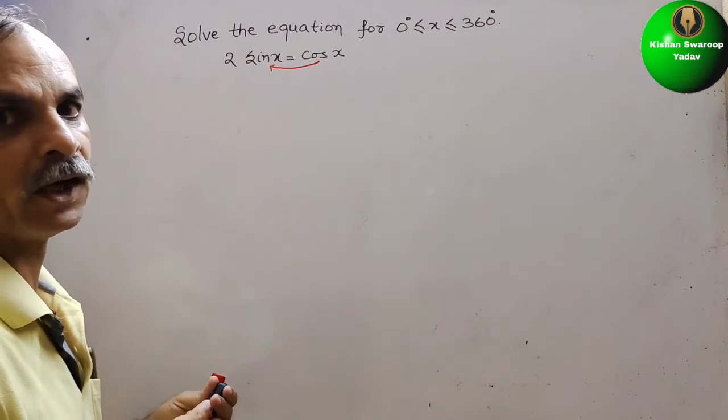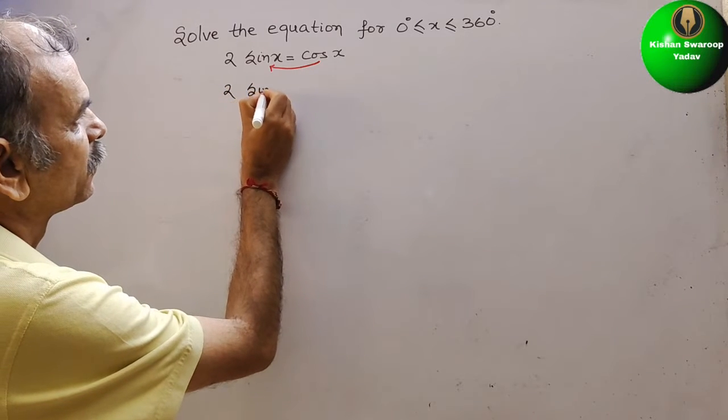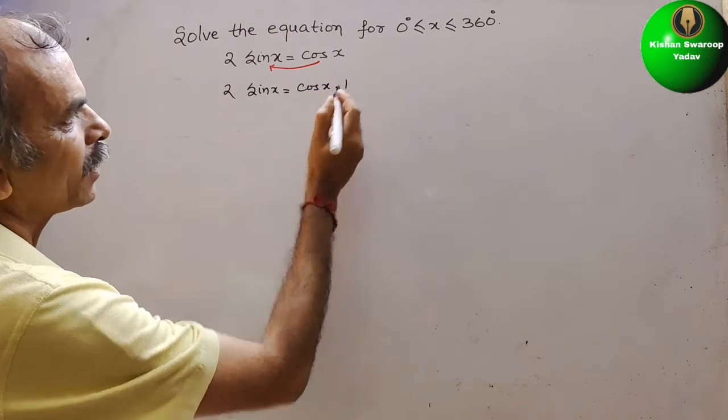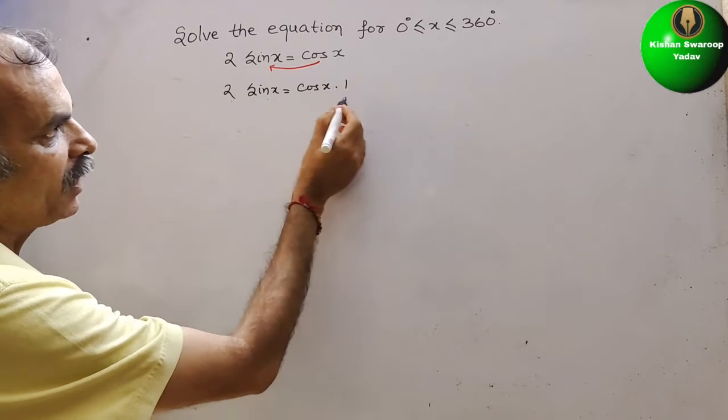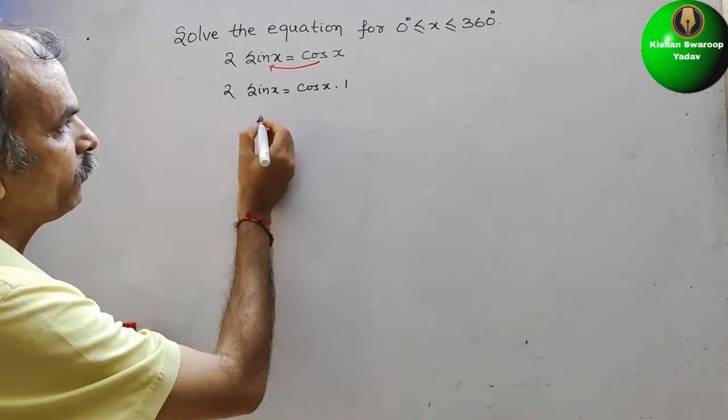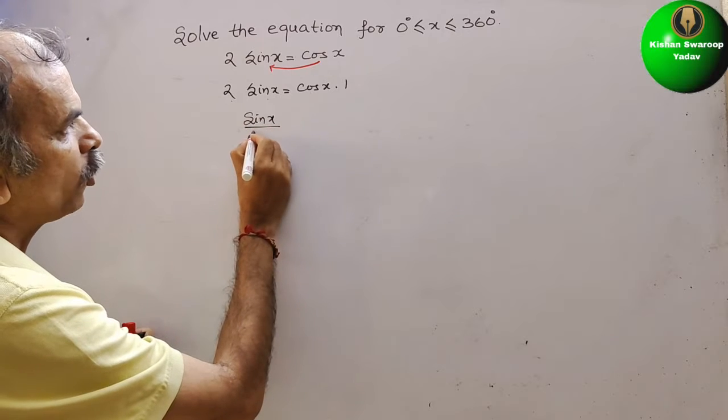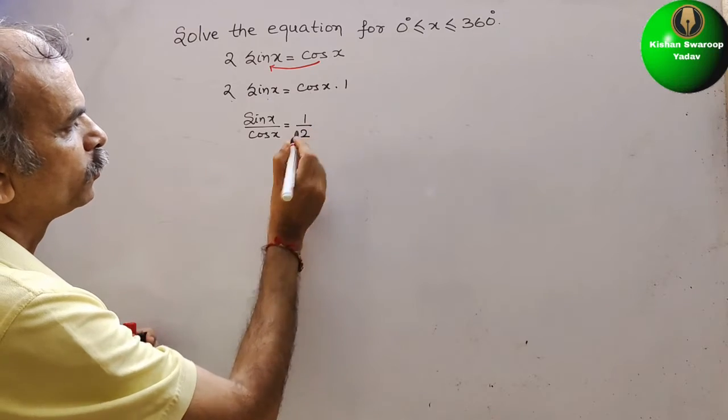So we can rewrite it as 2 sin x equals cos x times 1. So now this will come here and this will come here. So it will be sin x by cos x is equal to 1 by 2.